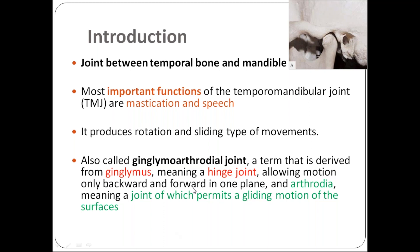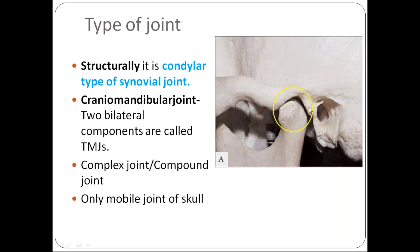The TMJ is a condylar — specifically bicondylar — type of synovial joint, because there is only one mandible but it articulates with both temporal bones. It is also a cranio-mandibular joint. The two bilateral components together are called the temporomandibular joints. It is a complex joint because it is covered by an articular disc.